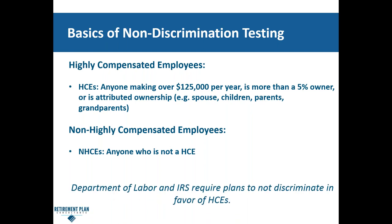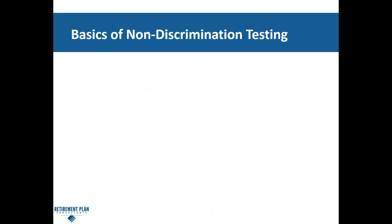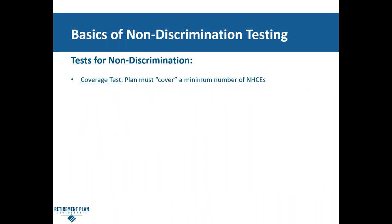The other group is going to be non-highly compensated employees, also referred to as NHCEs — anyone who is not a highly compensated employee. That's going to be your rank and file employees making less than $125,000 and less than a 5% owner. So if they're a 2% owner making $120,000 a year, they are going to be considered a non-highly compensated employee in regards to the ADP testing. These are all Department of Labor and IRS requirements that you do not discriminate in favor of the highly compensated employees within the 401k plan.